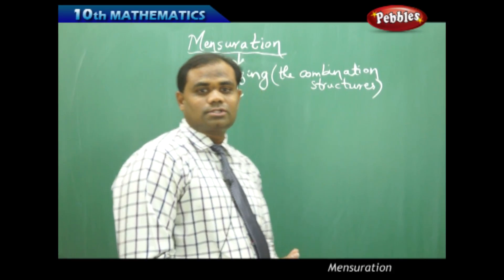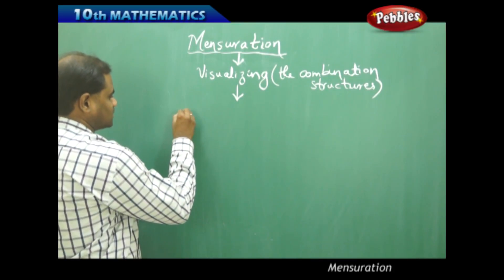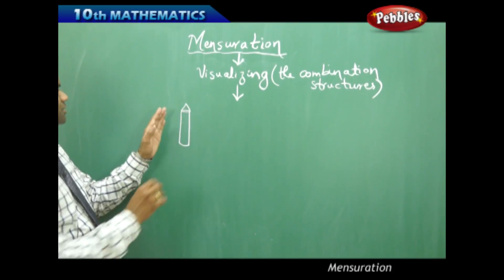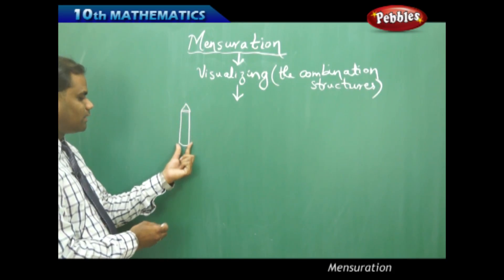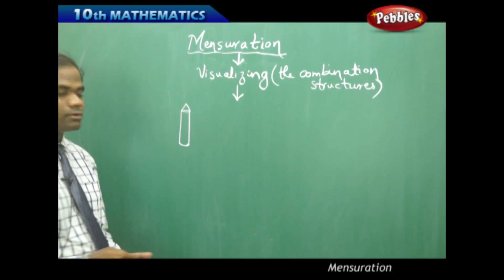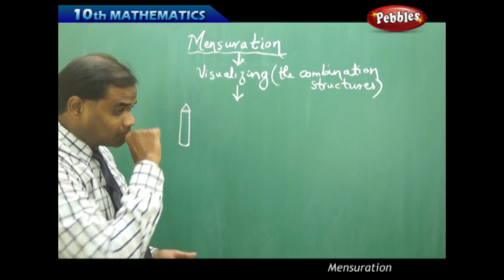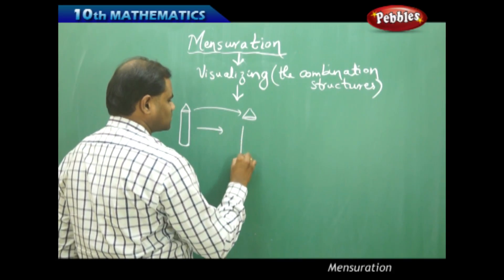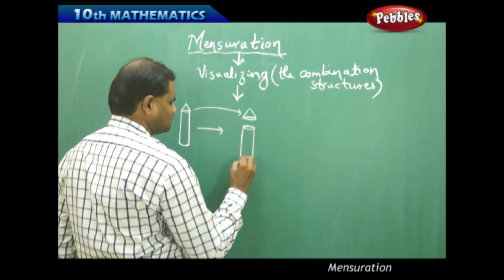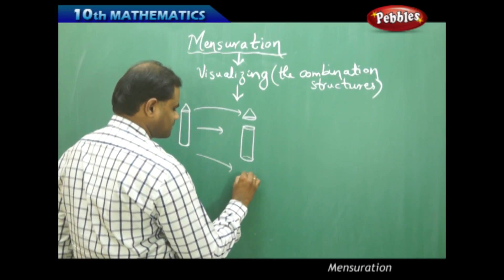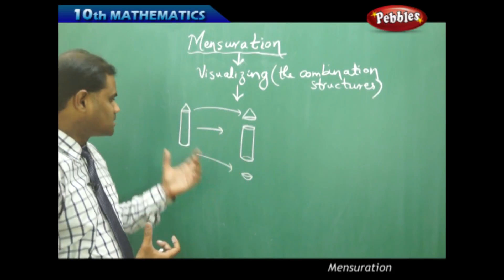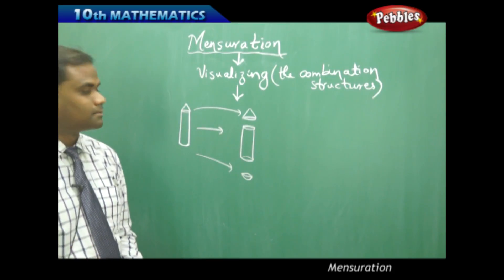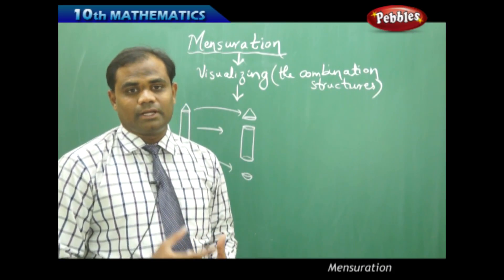For example, take the simplest example of a pencil. I see that it has a sharp object at the top, then the rest of it is flat, and then it is bulged at the bottom or sometimes flat. This makes me understand that there are different shapes combined here. These three different objects, when combined together, form a pencil which we most often use for graphing on graph sheets.